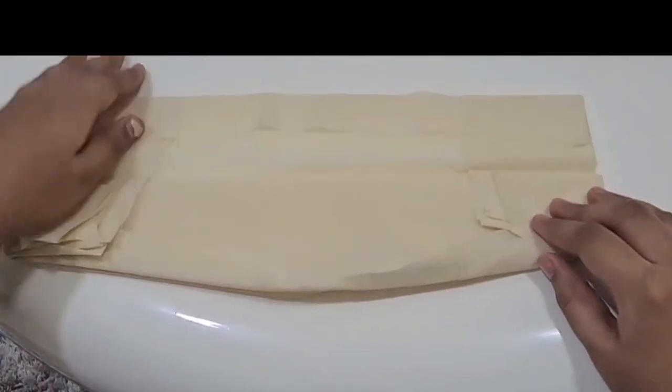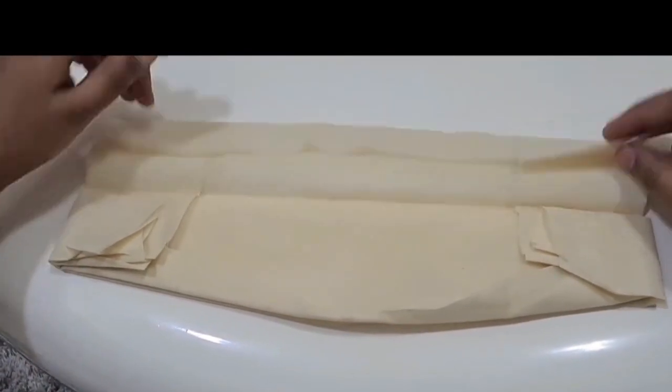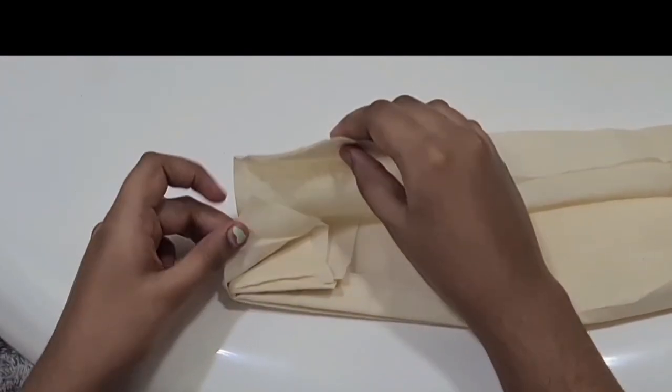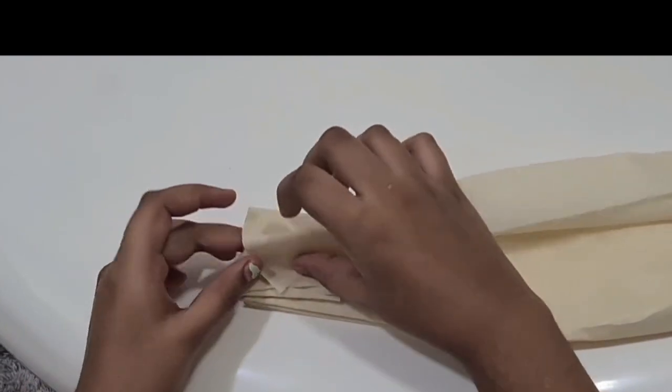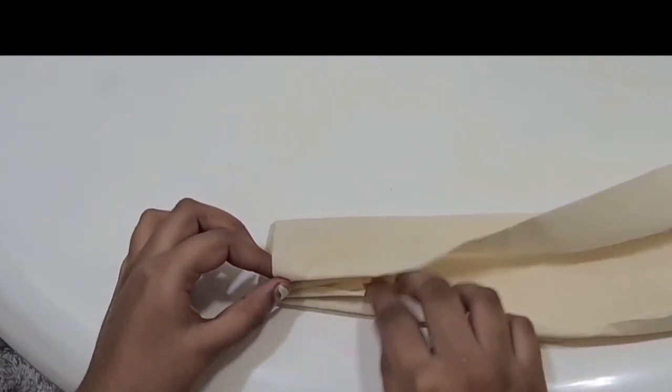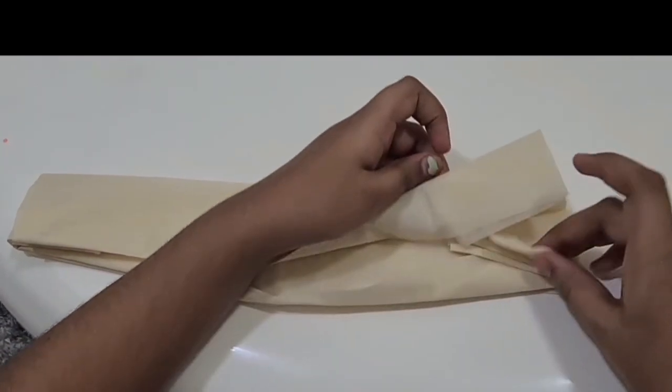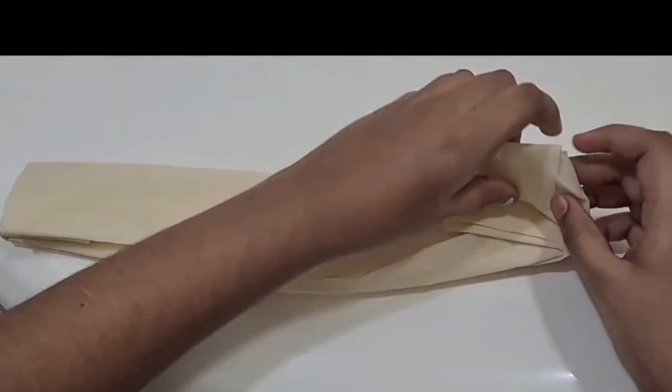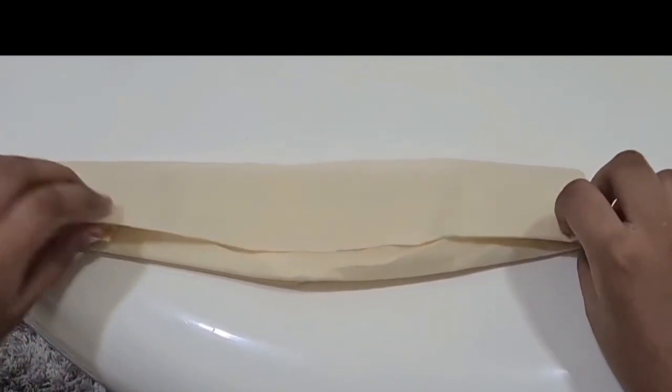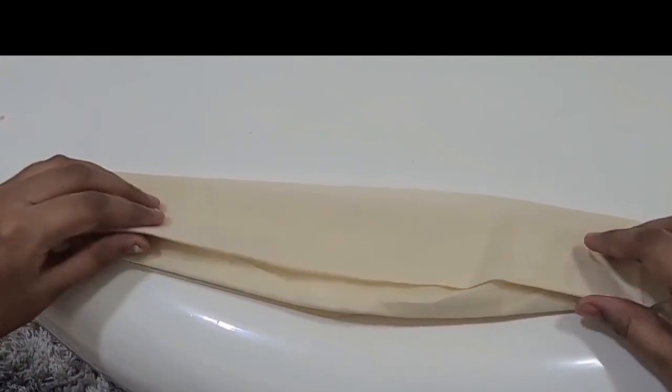Now we will be able to see some pockets on both sides of that part. Now we have to fold and then that end, tuck it inside the pocket. Make sure you have tucked it in properly, otherwise this Nehru cap may fall apart when you are using it.